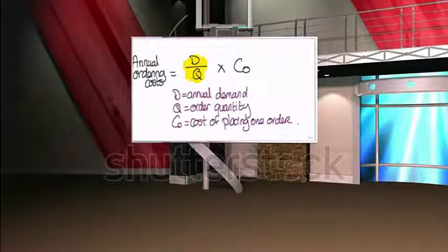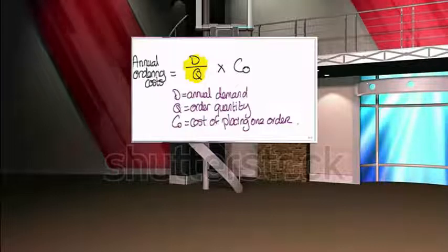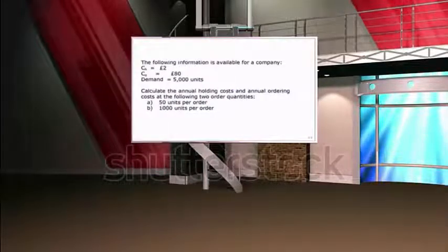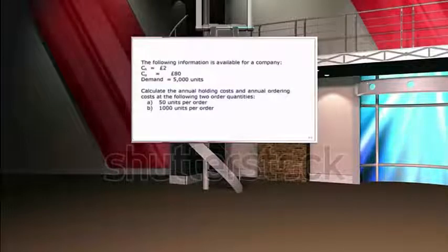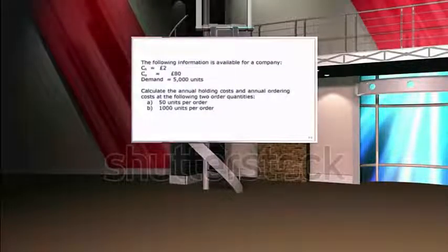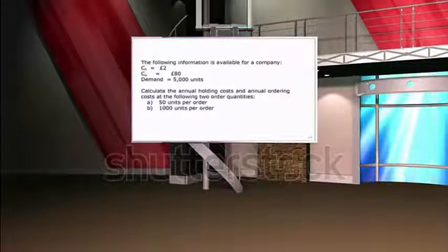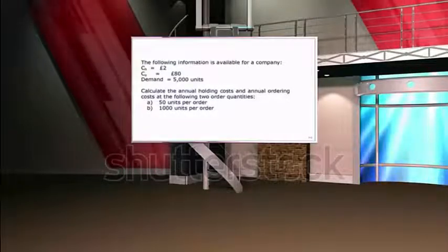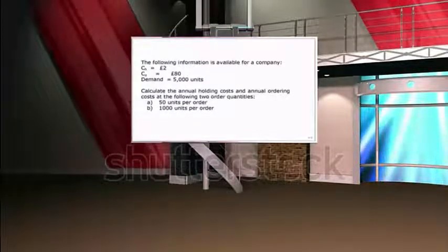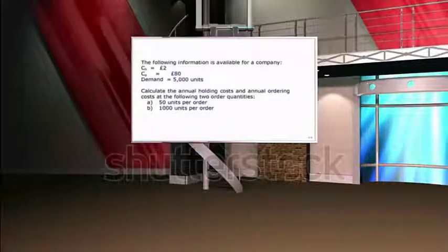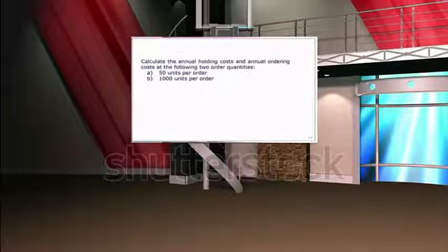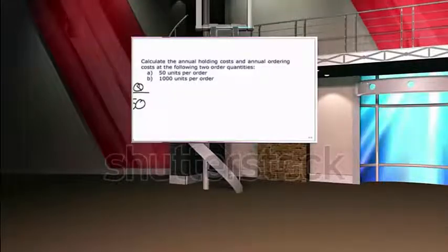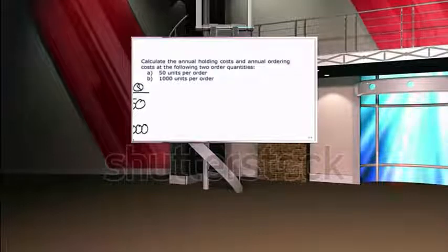Now let's look at a quick exercise to apply these two formulae. We're given the CH figure — the cost of holding one unit per annum — the CO figure, the cost of placing one order, and we're told that annual demand is 5,000 units. We've been asked to calculate the annual holding and annual ordering costs at two different order quantities: 50 units and 1,000 units.